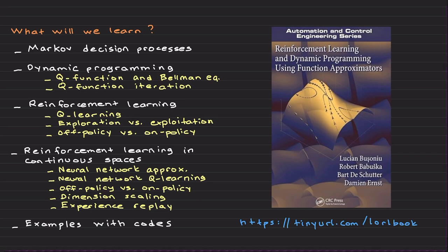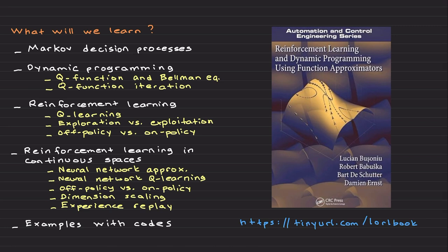After that we will cover reinforcement learning in continuous spaces. The Q-table stores reward values and allows choosing the best action, but it is discrete and can become impractically large. Reinforcement learning in continuous spaces requires approximating the Q-table using neural networks. We will cover neural network approximations, neural network Q-learning, and revisit off-policy and on-policy approaches.